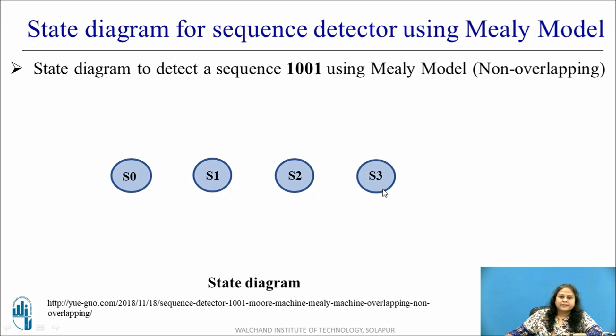Let us name them S0, S1, S2 and S3. Initially when the reset is pressed it will go to the initial state S0. Let us assume that the incoming bit stream is same as the sequence. So here in S0, that is in the initial state, if the first bit received is 1 then it will move to the next state that is S1. So S0 is used to wait for the first bit.